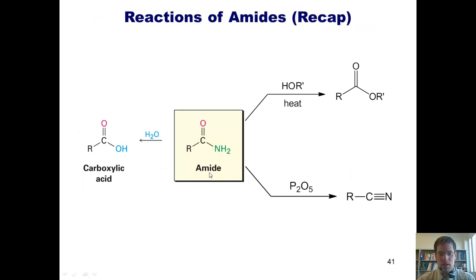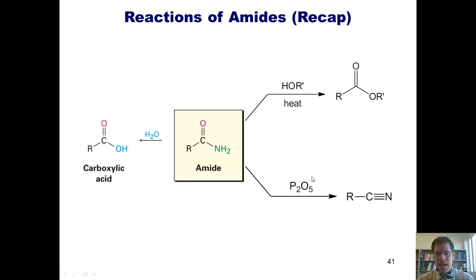Here are the reactions of amides, which are some of the least reactive species in the sequence because an NH- is a much poorer leaving group than an O- or a Cl-. But if we heat an amide extensively using water, we can replace the NH2 with an OH, converting it into a carboxylic acid. If we treat it with the dehydrating reagent P2O5, phosphorus pentoxide, it will convert the amide into a nitrile. Or, if we heat the amide with an alcohol, we can form an ester from it.